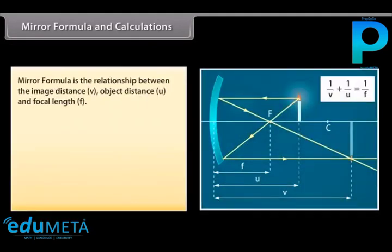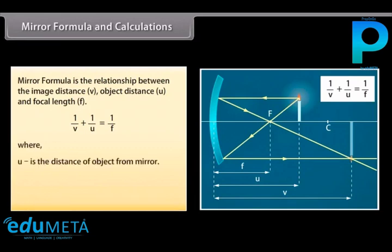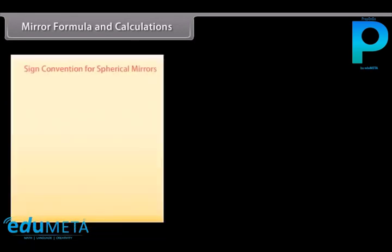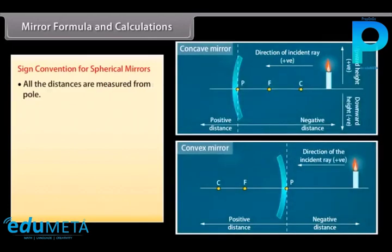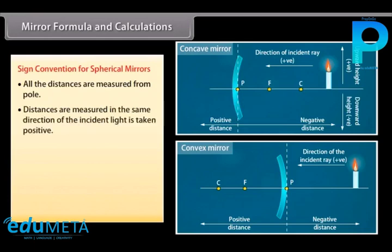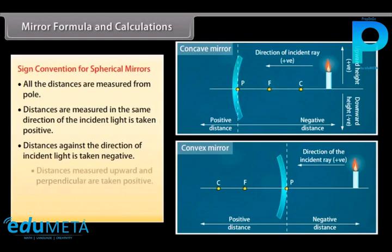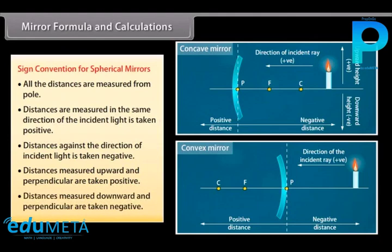Mirror formula and calculations. The mirror formula is the relationship between image distance V, object distance U, and focal length F. U is the distance of object from mirror, V is the distance of image from mirror, and F is the focal length of the mirror. Sign convention: all distances are measured from the pole. Distances in the same direction as incident light are positive; against the direction are negative. Distances measured upward and perpendicular are positive; downward and perpendicular are negative.